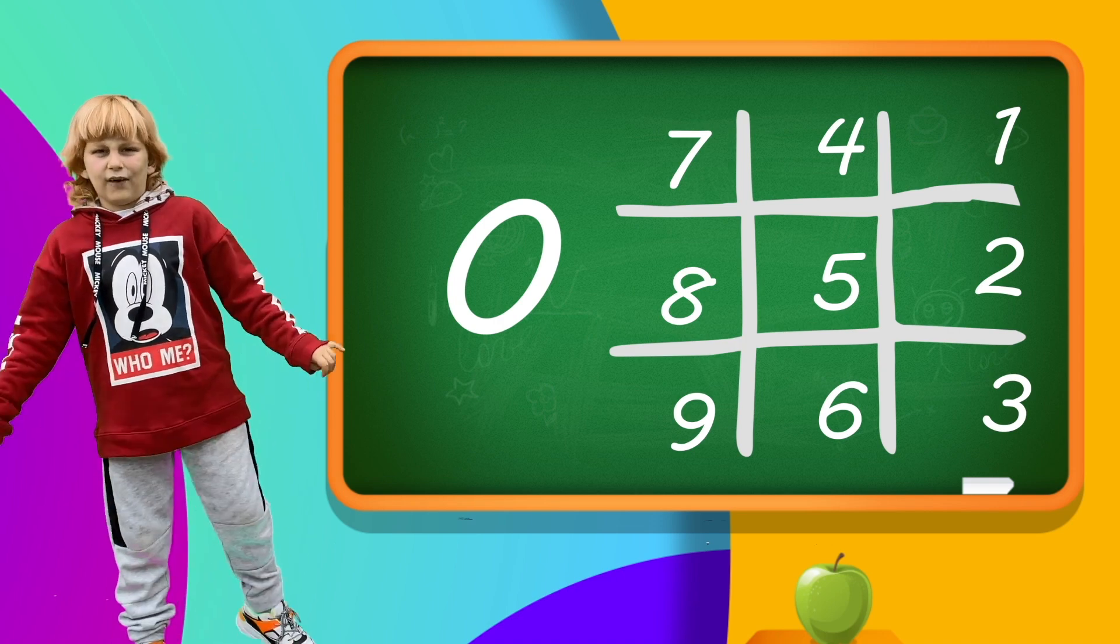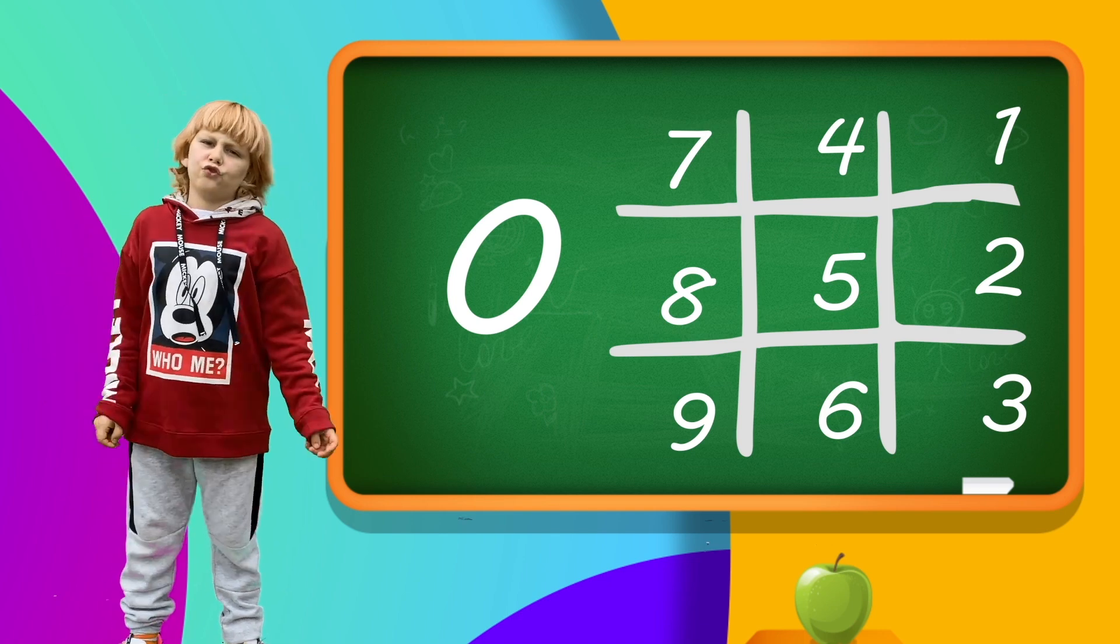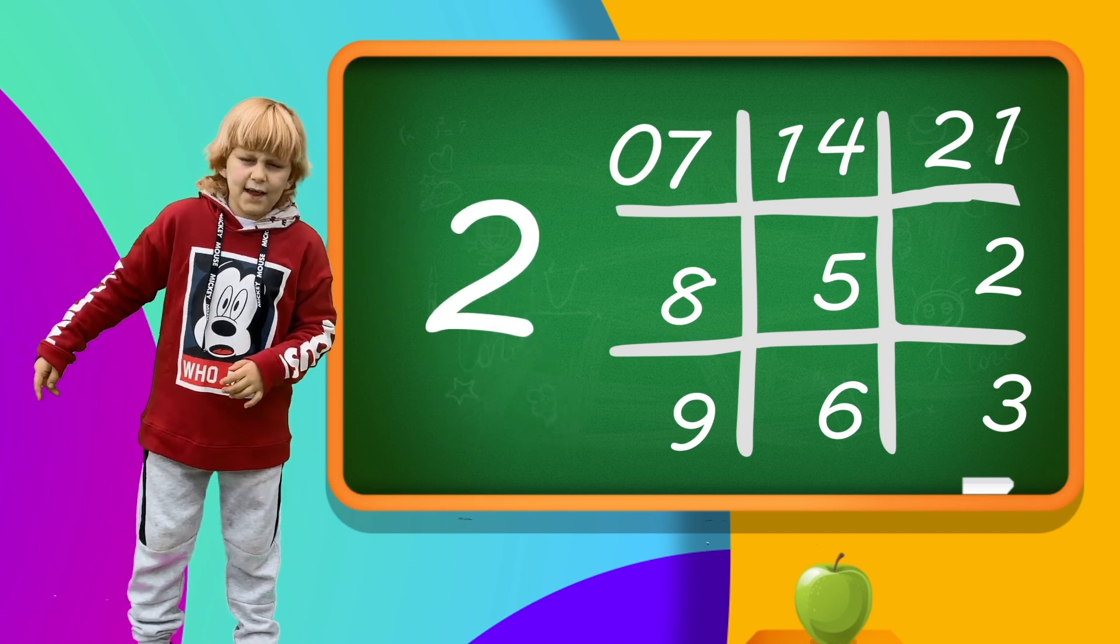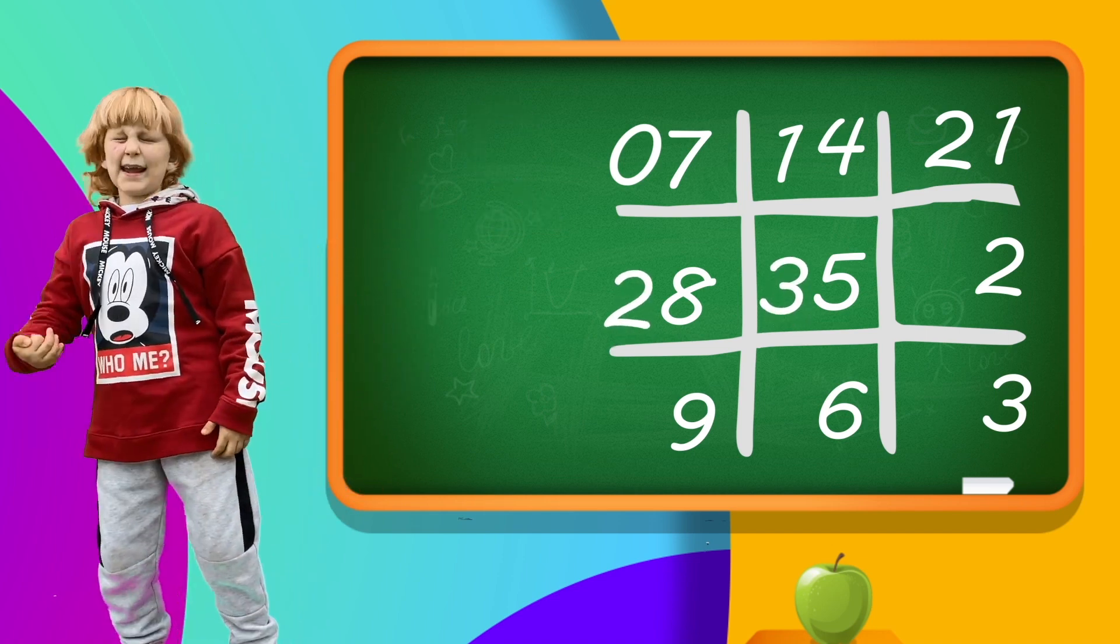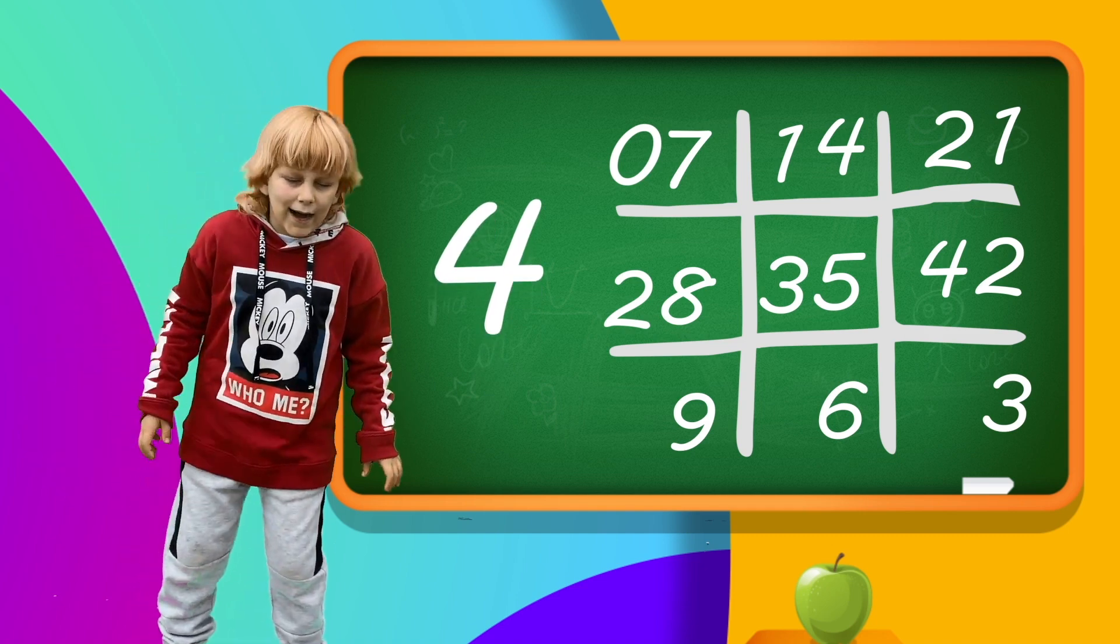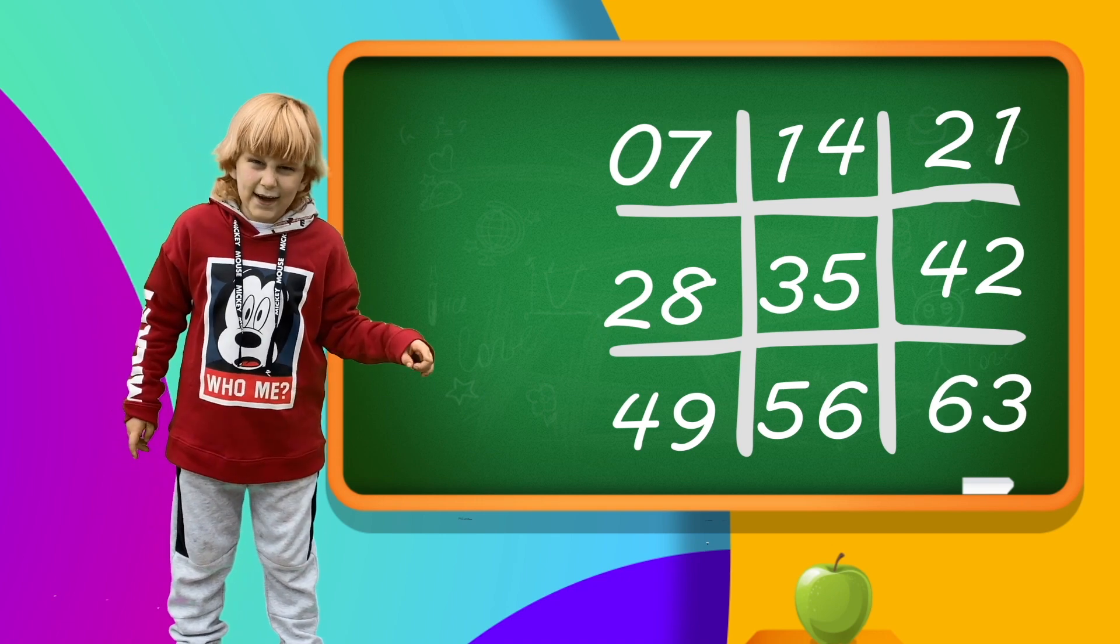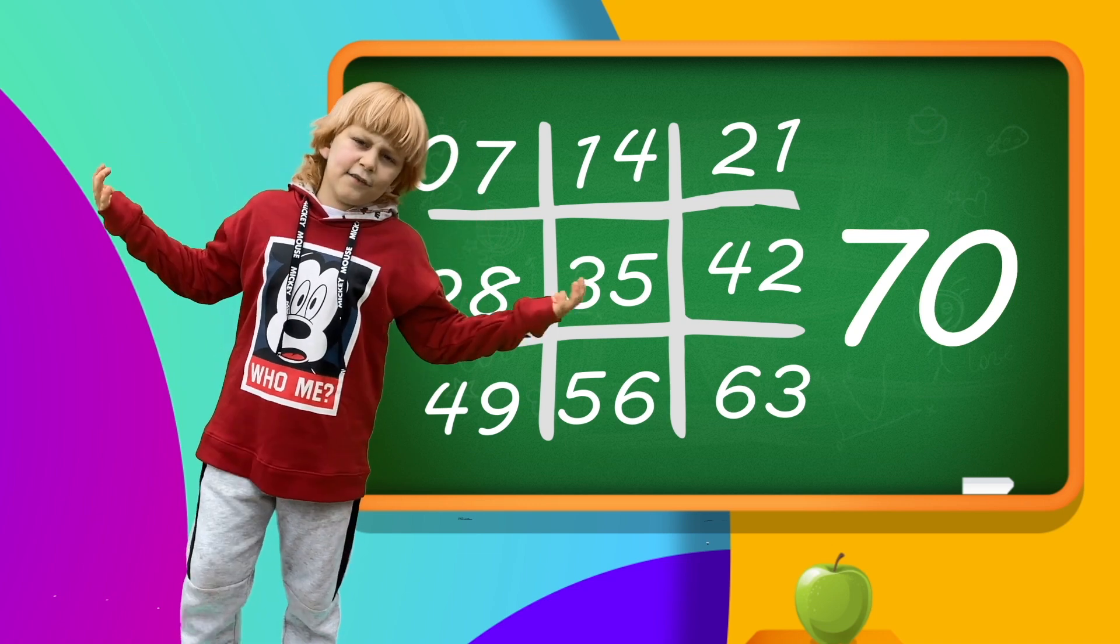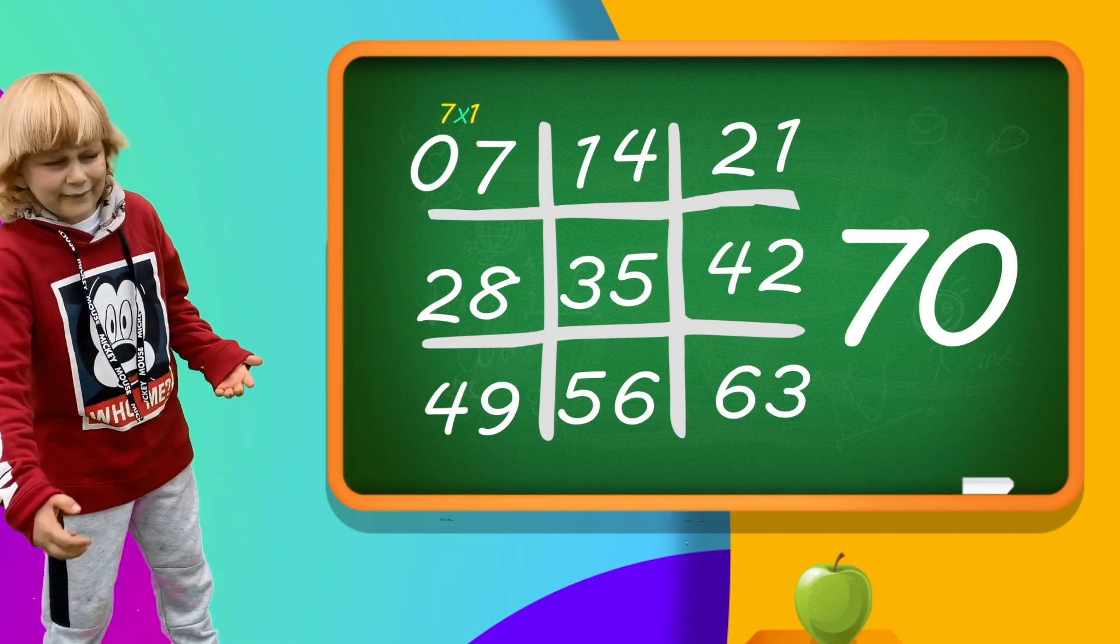So, then we write from the top left square the following numbers. So, zero, one, two from left to right, and then we repeat the two, and then we go two, three, and four from left to right again. And then we repeat the four, and we go four, five, six from left to right, and then a seven where you wrote the zero, and that's the table of seven.